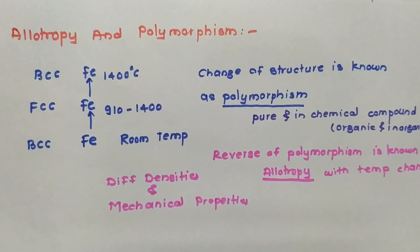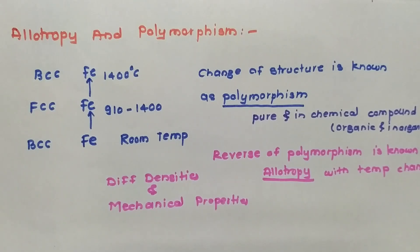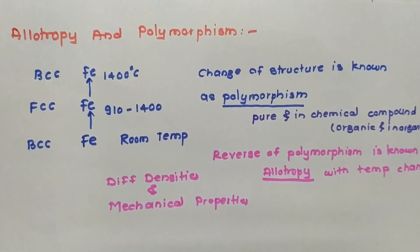In the case of allotropy and polymorphism, if we change the temperature, pressure, or composition, the material shows a different crystal structure — this is known as polymorphism. The reverse of that particular polymorphism is known as allotropy.